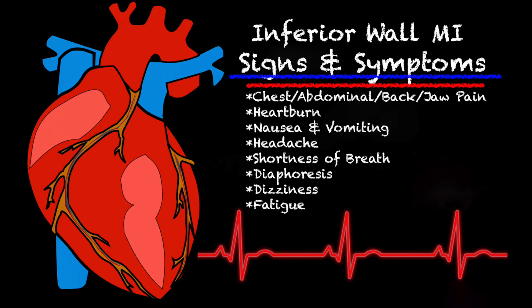So how does a patient present if they're experiencing an inferior MI? Honestly, it really just depends on the patient and their gender, because males and females definitely experience heart attacks differently. But you could see chest pain, abdominal pain, back and jaw pain, possibly left shoulder and left arm pain. And those are telltale signs, but there's also heartburn, nausea and vomiting, a headache, and shortness of breath.